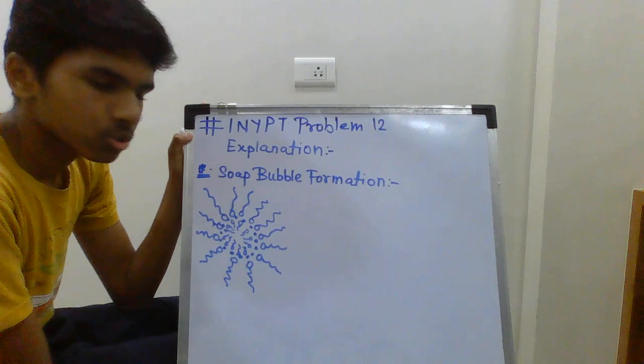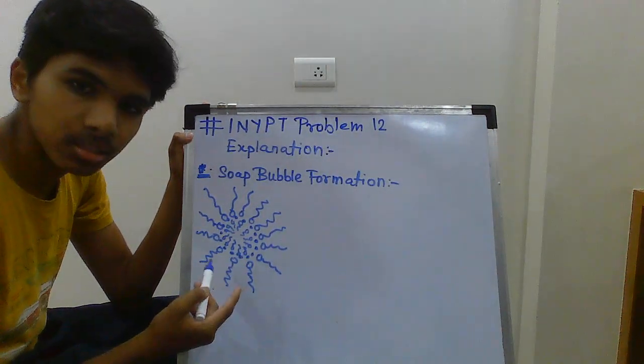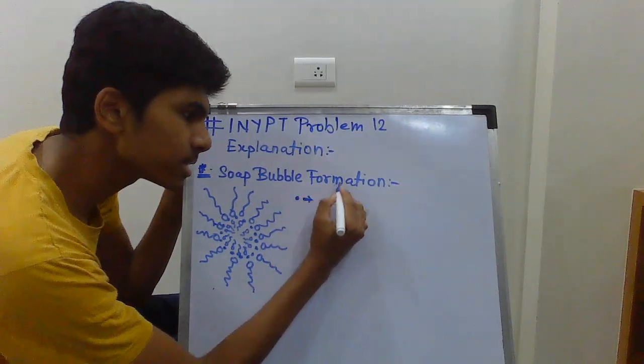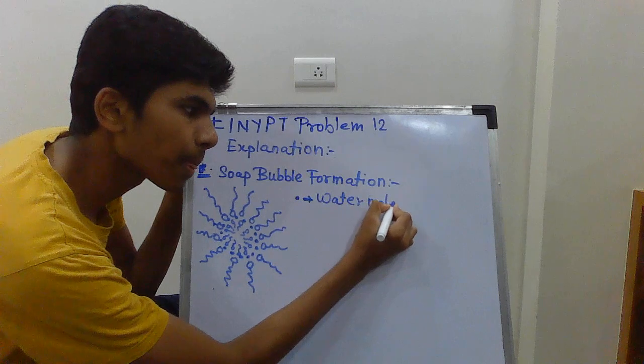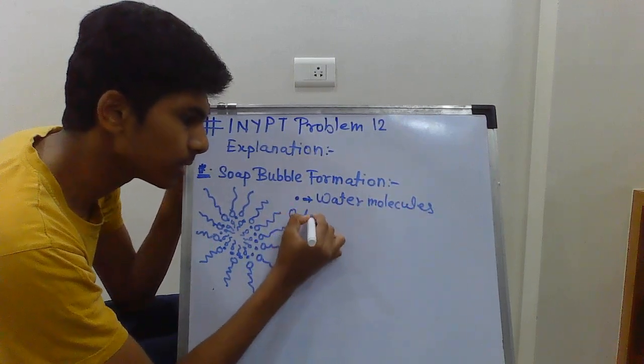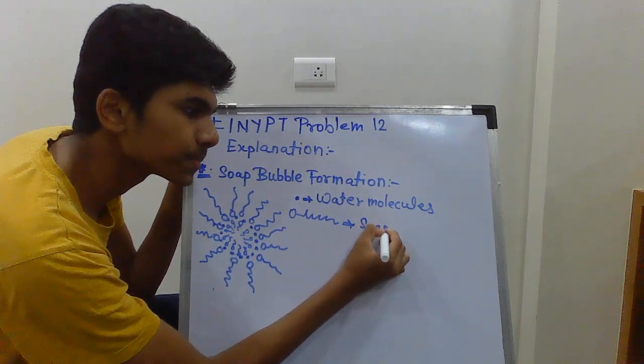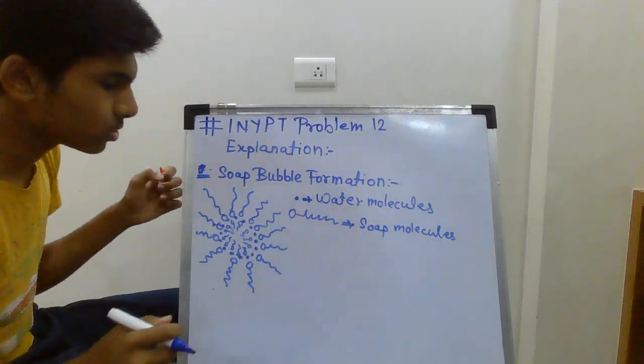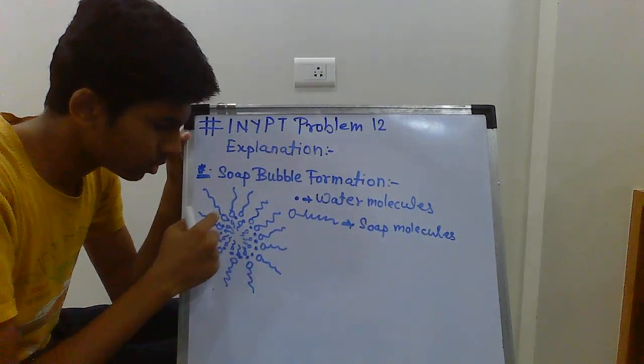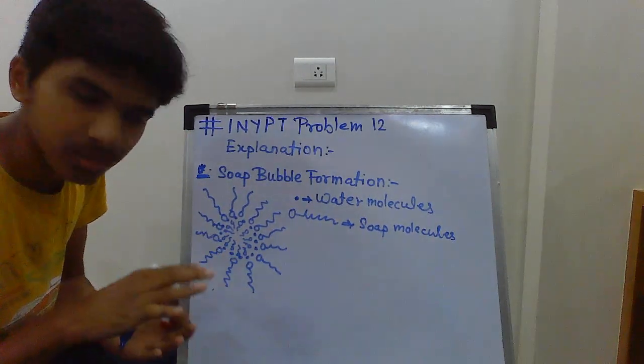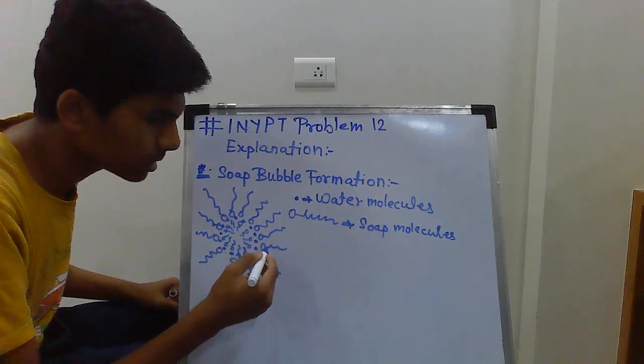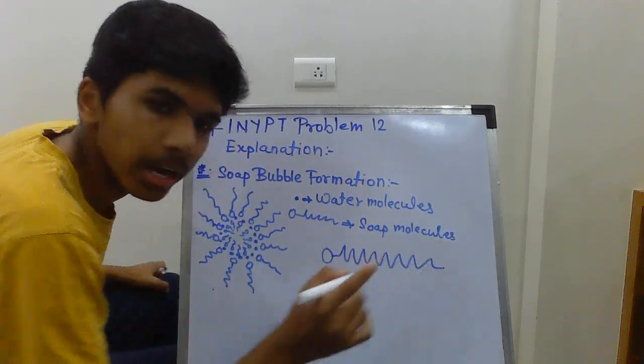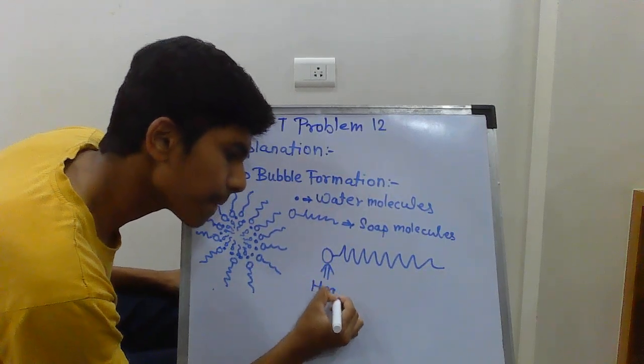So this is the soap bubble formation. Here I have drawn a diagram representing the soap bubble formation. So here we can see two types of molecules. The dots represent water molecules, whereas this whole structure represents soap molecules. To avoid the crowding, I have represented the inner soap molecules very small. So you can see that the water molecule layer is sandwiched between the soap molecule layer.